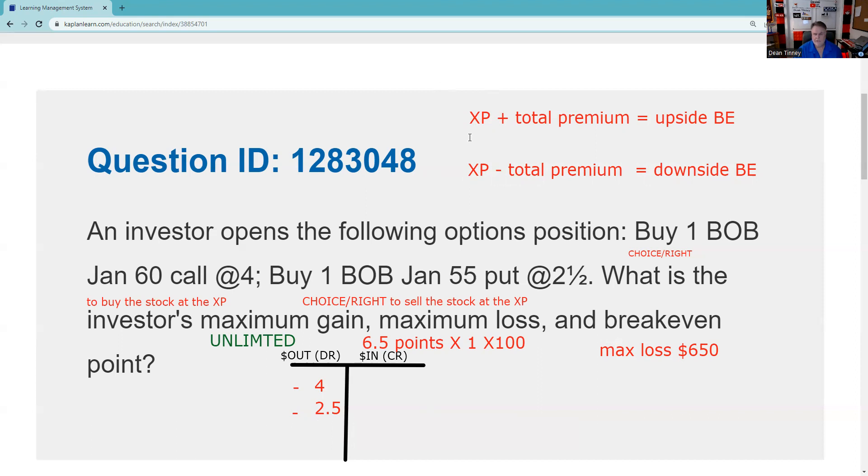But if we take the strike price, let's get a different color here. Strike price call up. I got to be careful now because remember the strike prices are different. So it's going to be strike price plus six and a half. Get my upside breakeven. And it's going to be strike price, and be careful here. The strike price here is 55.